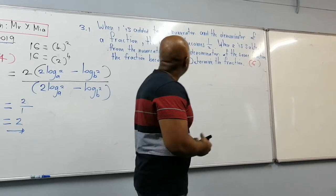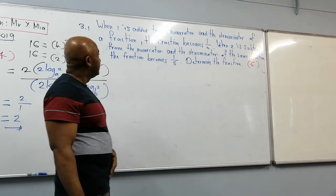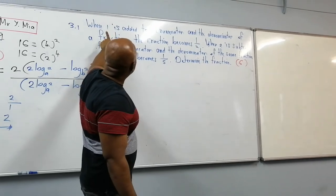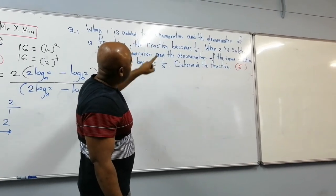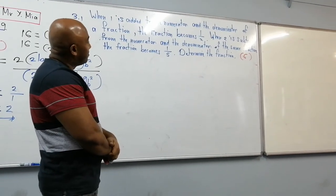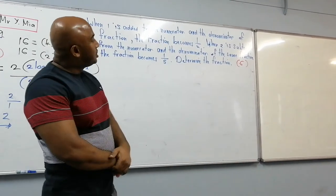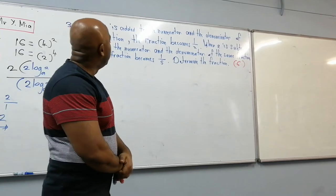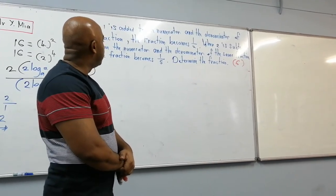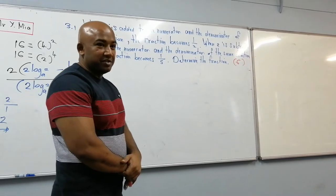The next question is 3.1 for 6 marks — a word problem from Chapter 4. When 1 is added to both the numerator and denominator of a fraction, the fraction becomes half. When 2 is subtracted from both the numerator and denominator of the same fraction, it becomes 1 over 5. Determine the fraction.